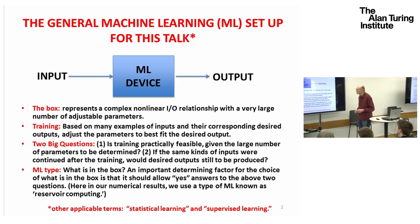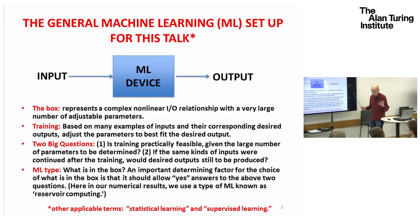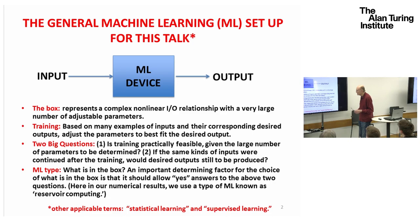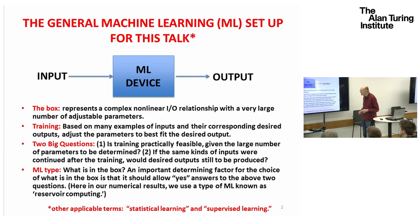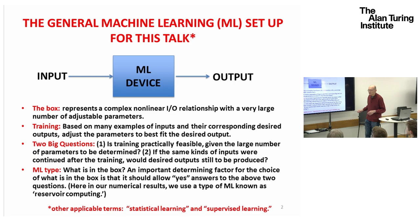There are two big questions. The first is: is training practically feasible, given this very large number of parameters that have to be determined? Second, if the same kind of inputs were continued after training, would the desired outputs be reproduced? In other words, will the thing generalize from the examples to a broader class?